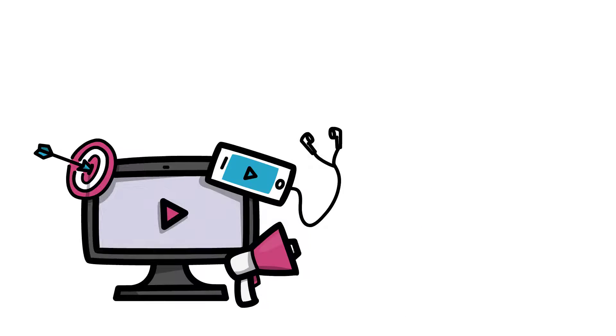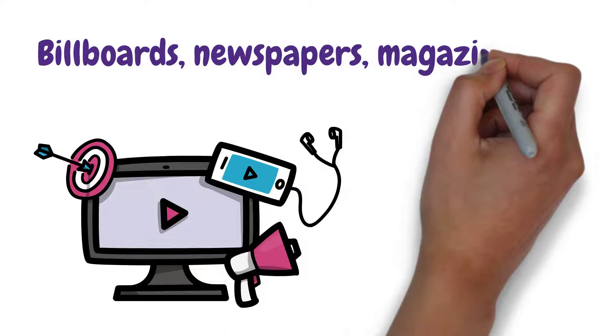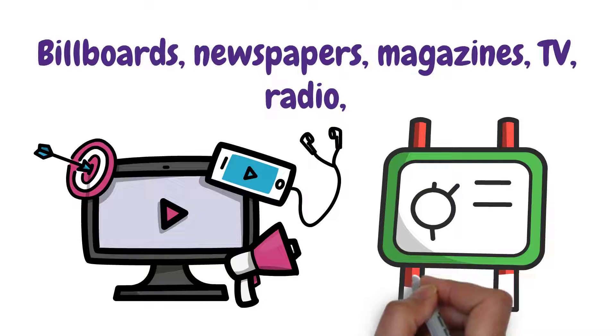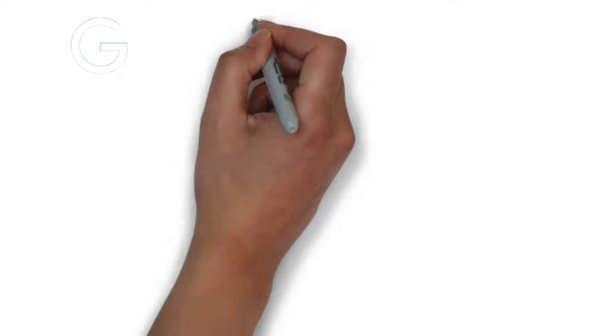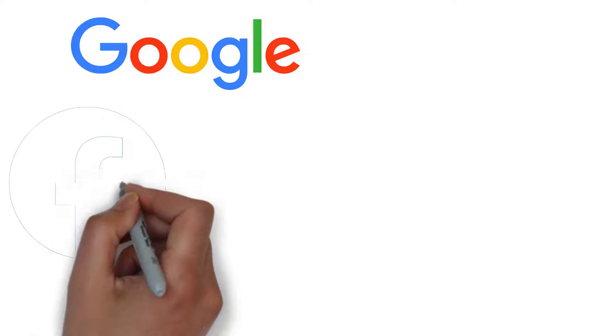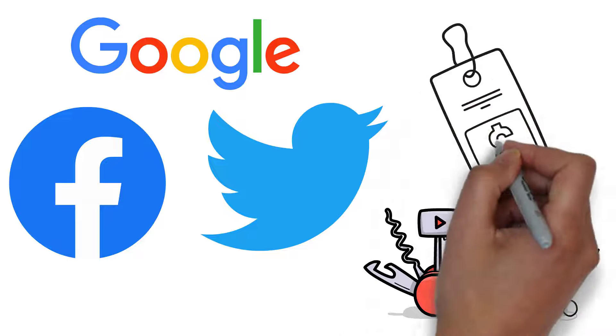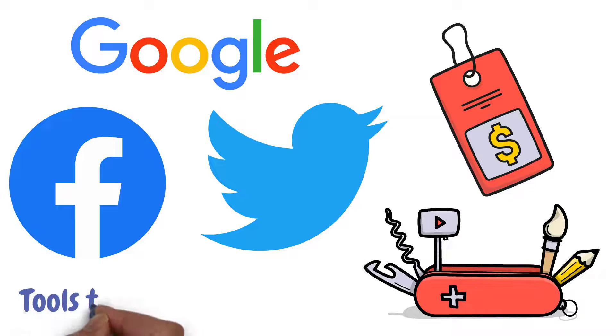There are traditional ones like billboards, newspapers, magazines, TV, radio, or maybe even simple flyers and posters. And there are also digital tools like Google ads and social media ads on Facebook, Instagram, or Twitter. There are many options out there and each has a different cost plan. So get to know the tools that you might want to use as well as their cost.